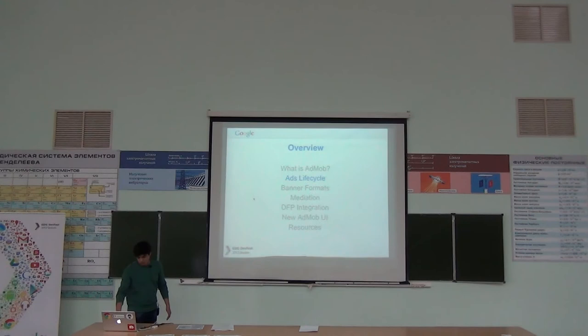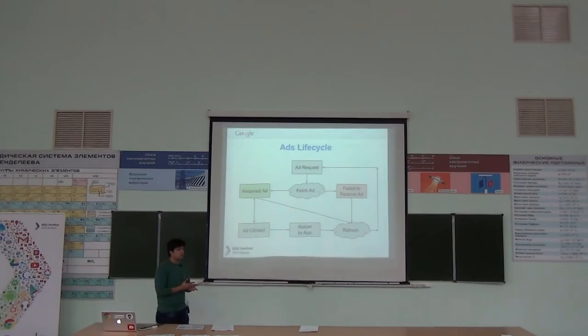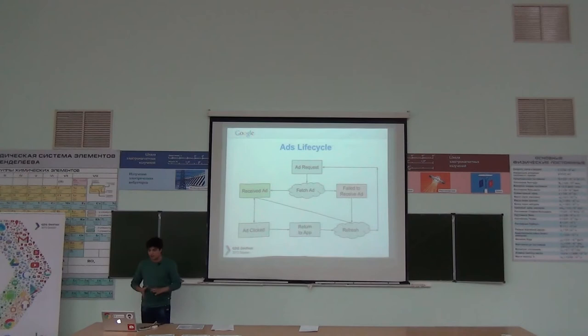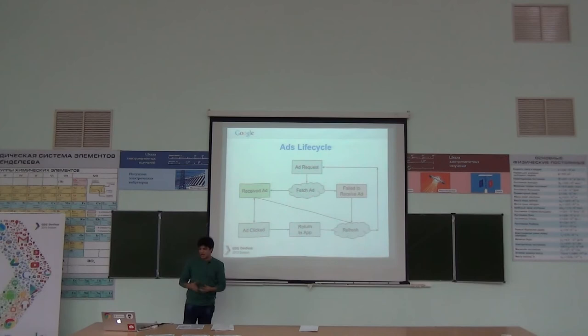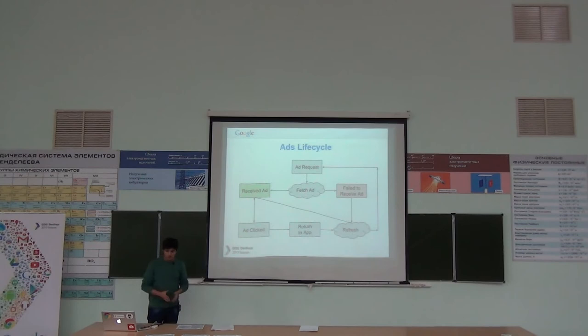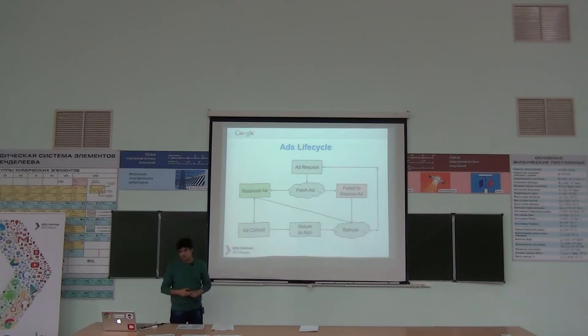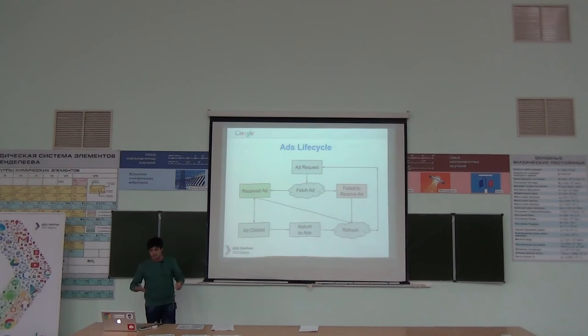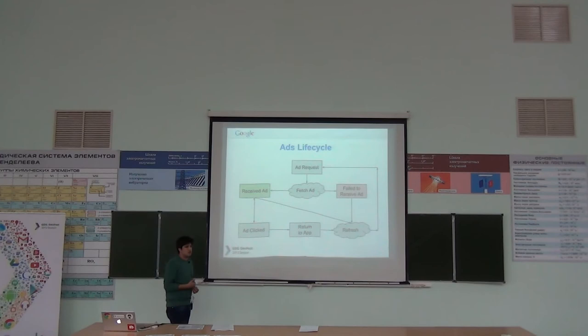From an SDK point of view: once you have an ad view at the bottom or top of your app, you make a request and the SDK requests the server. If there is an ad, it is shown; if the user finds it relevant, they click. If there is no ad, the 'failed to receive ad' method is called. The refresh rate, set to a minimum of 30 seconds, triggers a new request. Failure to receive an ad can be for two reasons: either the network is not good or there is a lack of ad inventory — which can happen if you are asking for too high an eCPM value.